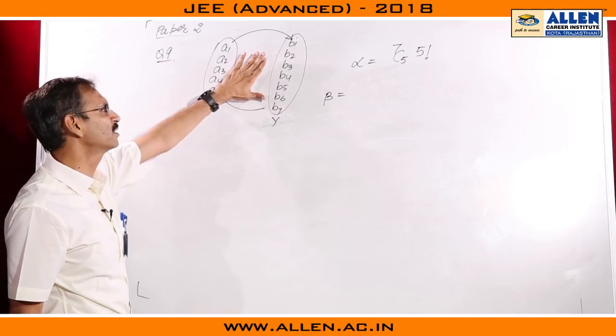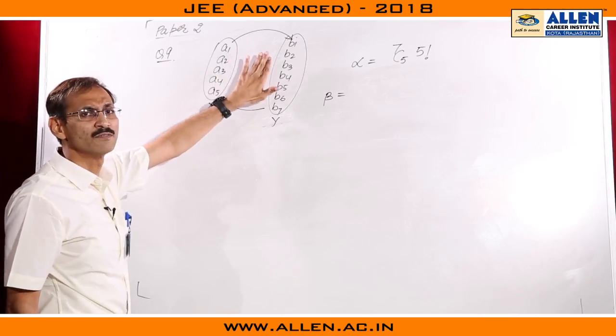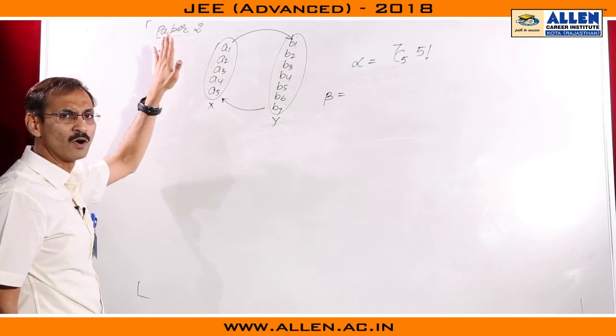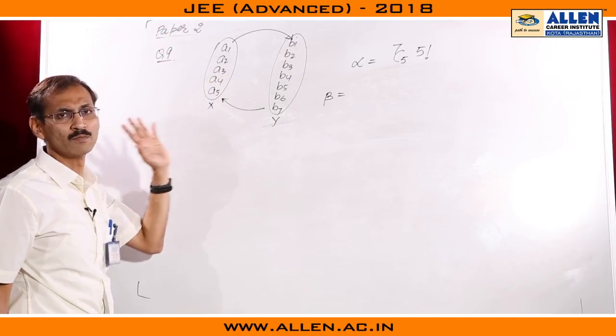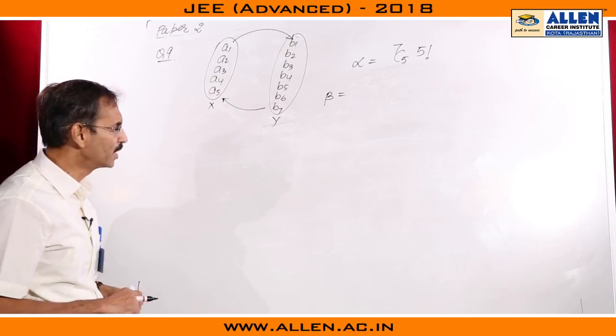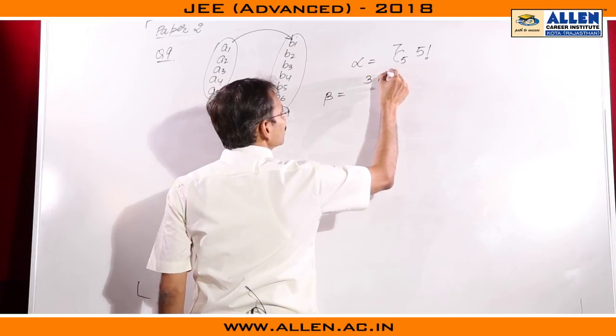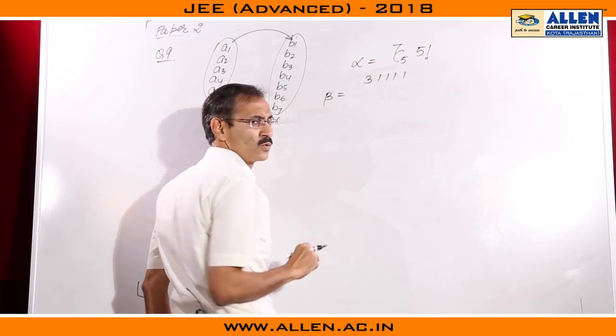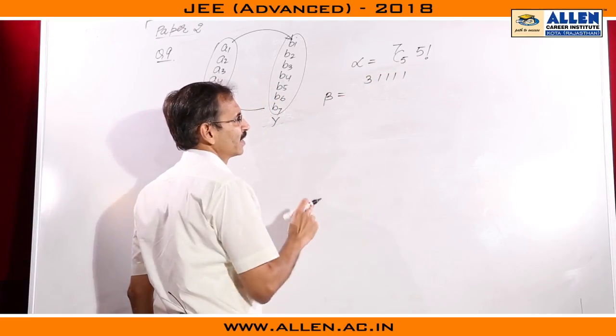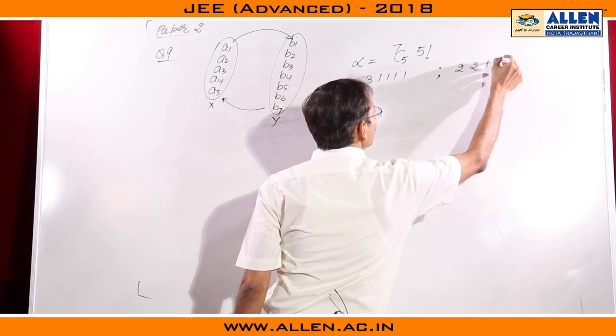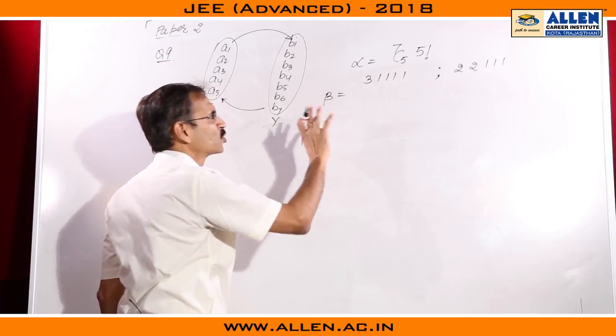We can also see it like this: there are 7 books, 7 different books we have to disperse among 5 students, 5 boys, such that each boy gets at least one book. So we divide these 7 things into 5 groups. We make one group which will have 3 books, and the rest will have one each. And second type of grouping will be 2, 2, 1, 1, 1. Five groups.